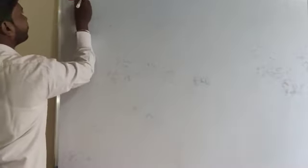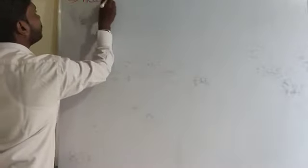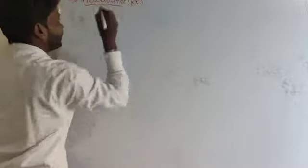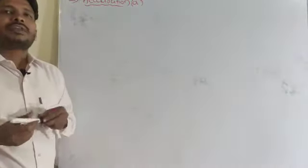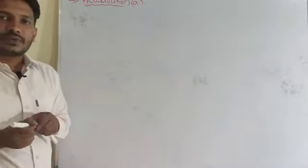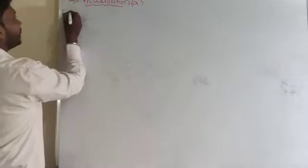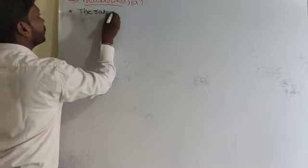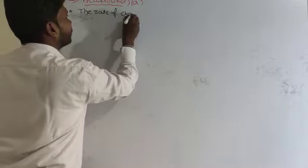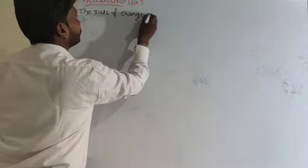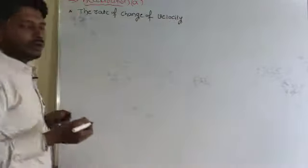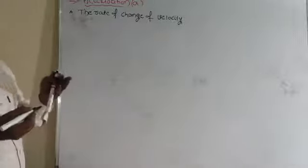Let me discuss the topic of acceleration here. Acceleration is represented by the symbol 'a'. What is acceleration? The rate of change of velocity — we can call it acceleration. So acceleration is the rate of change of velocity, or it is the ratio of velocity divided by time taken.